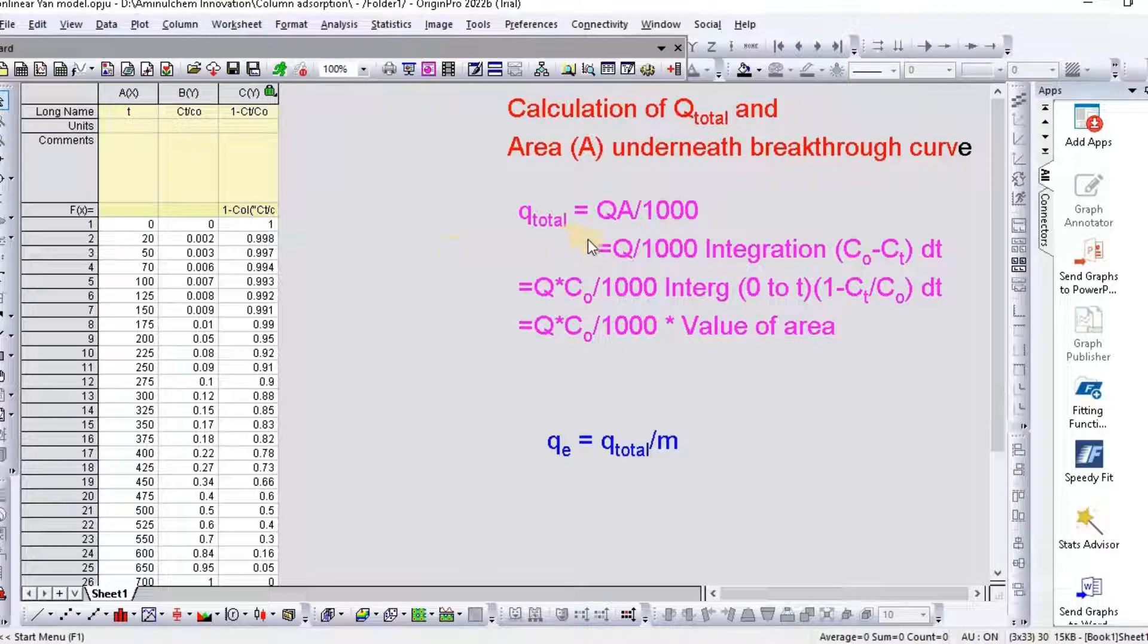While Qt total equal to QA divided by 1000 equal integration 0 to T.